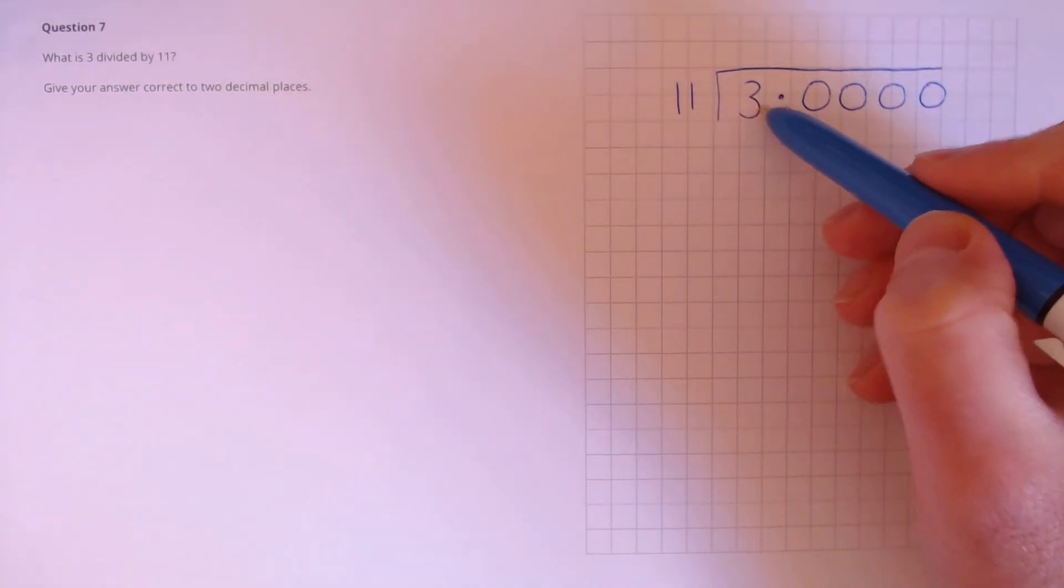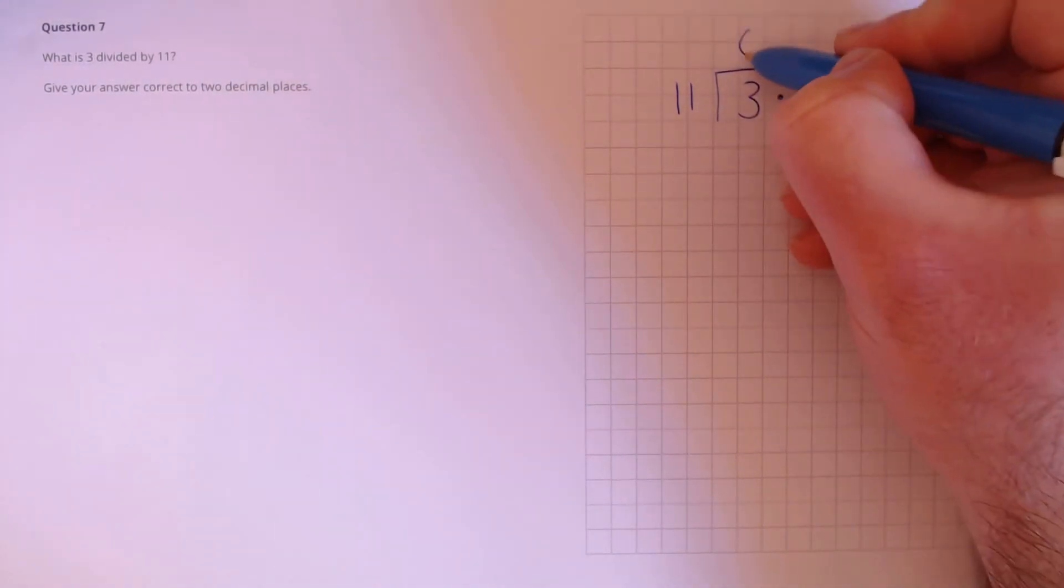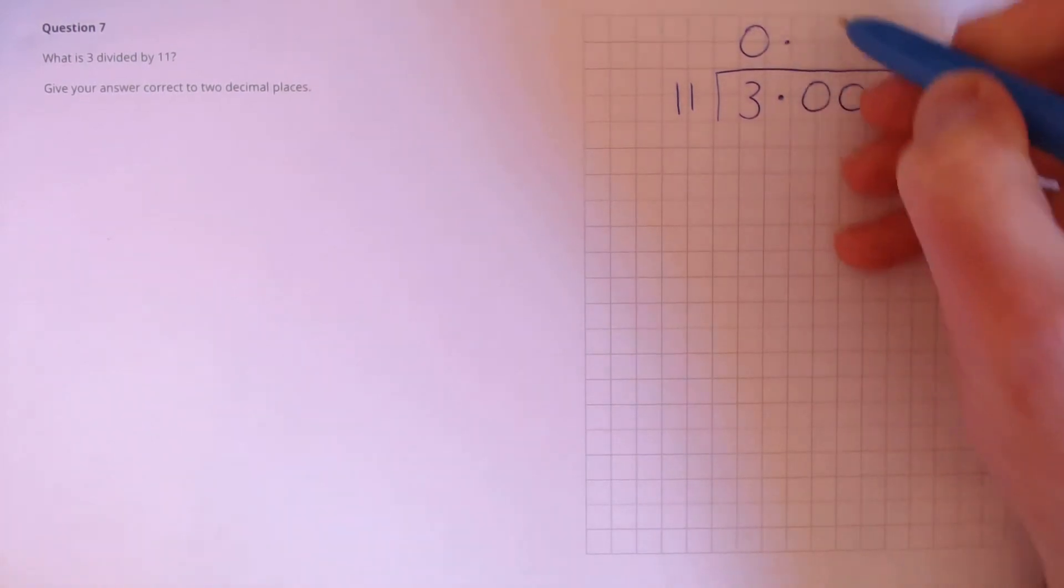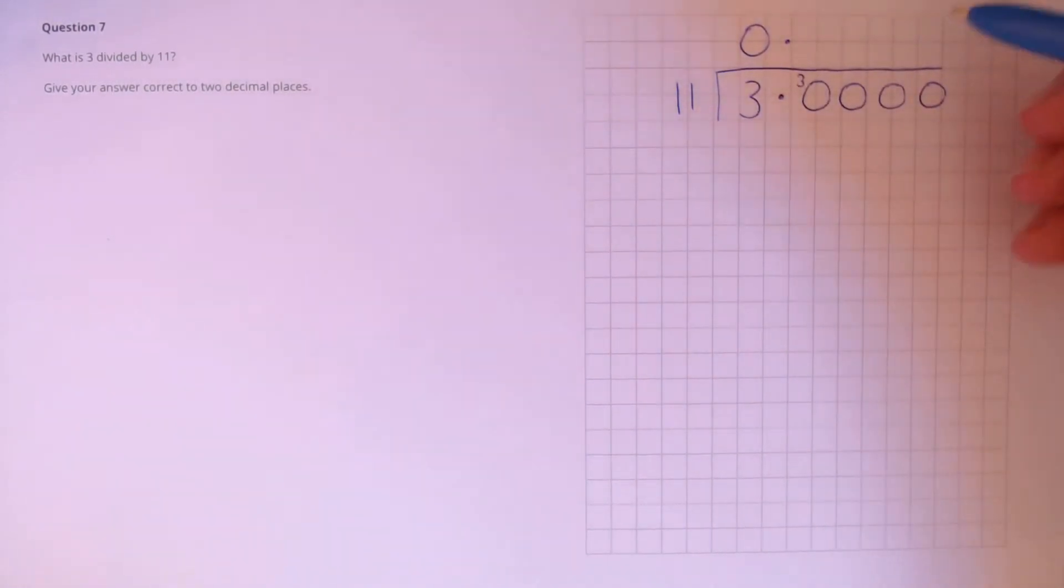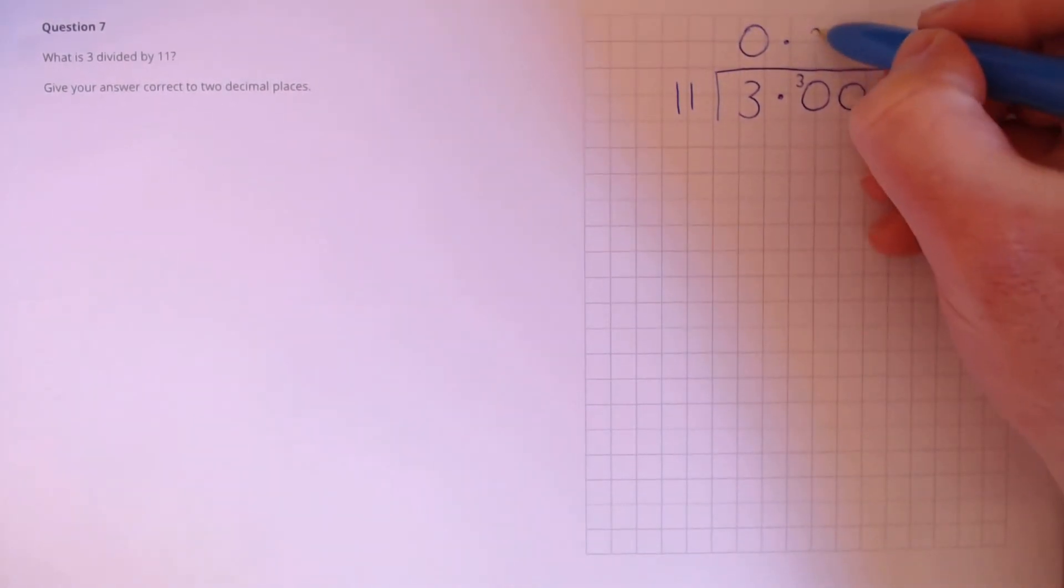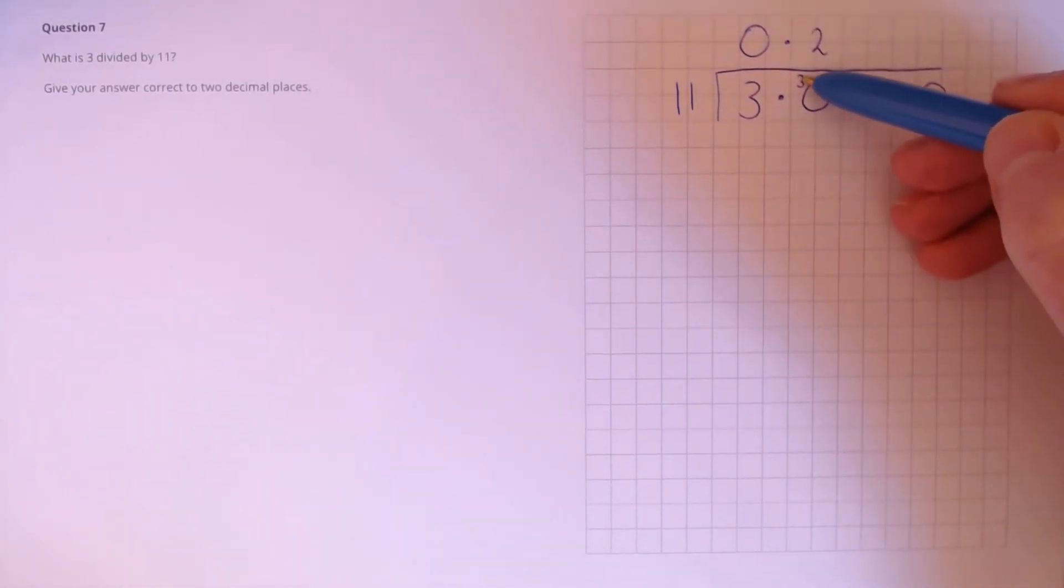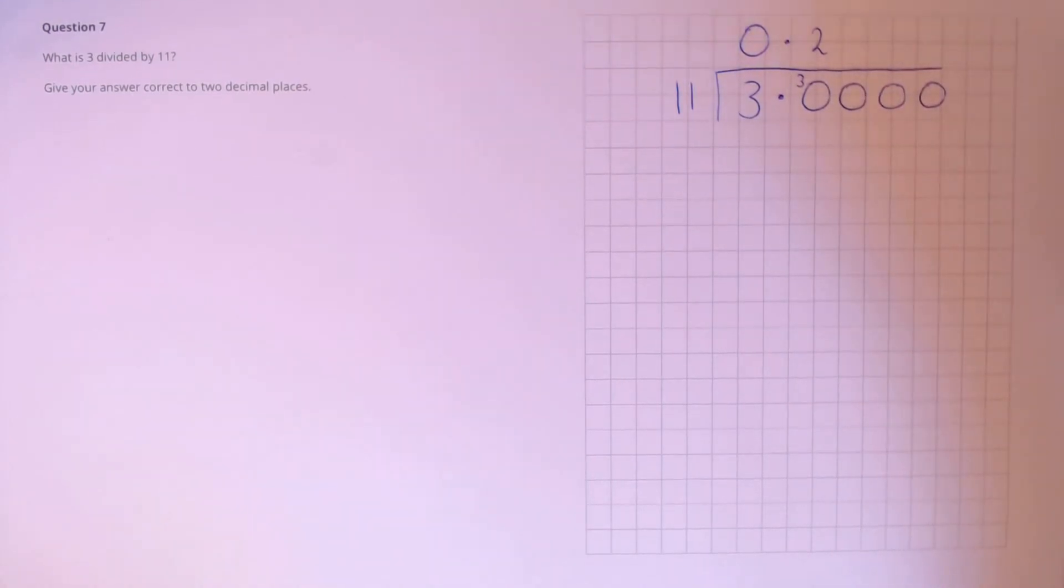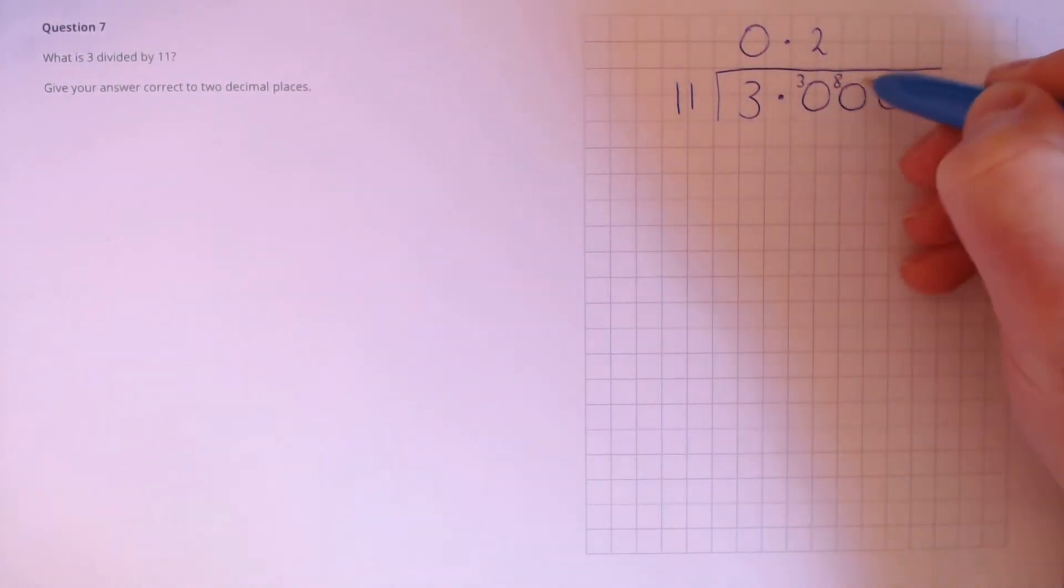First, 11s into 3. So 3 divided by 11 that doesn't go. And we carry over our 3 to here. So 30 divided by 11 that goes twice at 22. So we take our 30, take away the 22 which is 8 and that's our remainder to carry over.